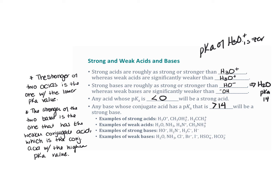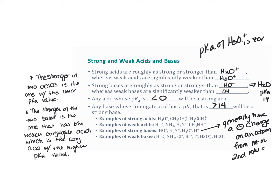There are some patterns that emerge in these classifications. Strong bases generally have a negative charge localized on an atom from the first or second row of the periodic table. Strong acids generally have a positive charge, but some positively charged species like NH4+ are weak. So this is where estimating pKa values is really, really helpful and can be applied as we go through mechanisms.